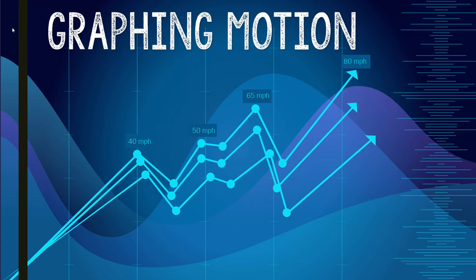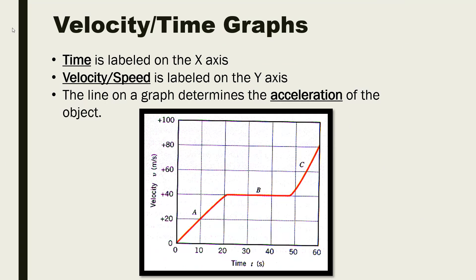We are in lesson 3 of our force and motion unit. In lesson 1, we talked about speed. In lesson 2, we talked about velocity. Now in lesson 3, we're going to bring that together and try to interpret the speed and velocity of an object by looking at a line graph. Motion can be described and interpreted via a graph, table, or chart.